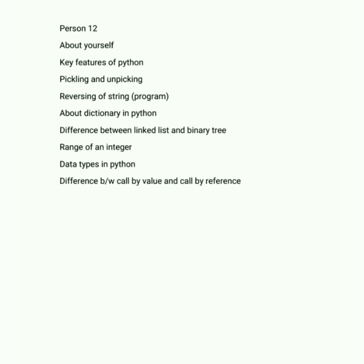Key features of Python: Python has extended modules and libraries, simple syntax, and all the OOP features. What is pickling and unpickling? Also, to reverse a string, you can simply use the built-in function 'str[::-1]' or the equivalent reverse function. A dictionary in Python is a key-value pair — values can be duplicated, but keys cannot.